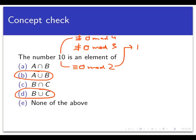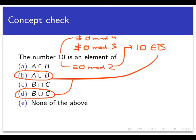The fact that 10 is congruent to 0 mod 2 means 10 belongs to set B, the set of all natural numbers that are 0 mod 2. Since it belongs to B, it belongs to A union B, because A union B is the set of all elements in either A or B or possibly both. The fact that 10 doesn't belong to A doesn't matter — it belongs to B, and that's enough. Likewise, 10 also belongs to B union C, again because it belongs to B.